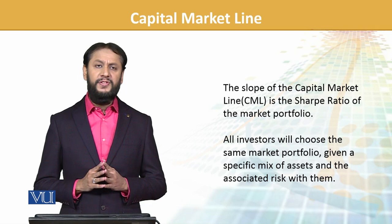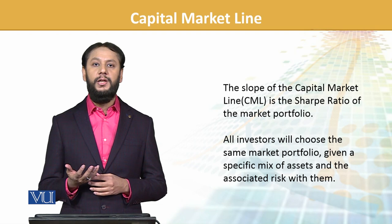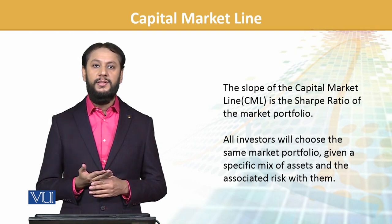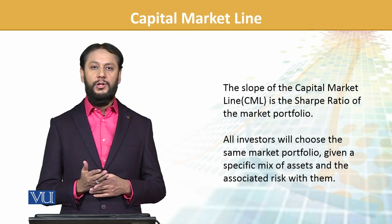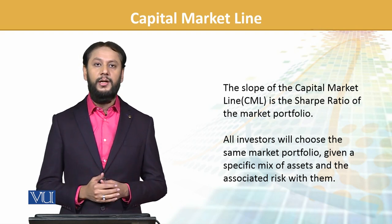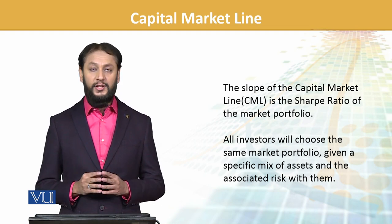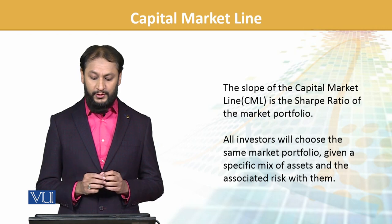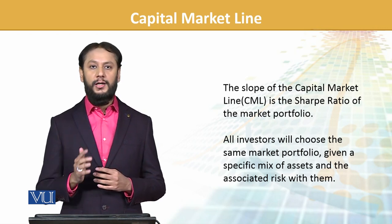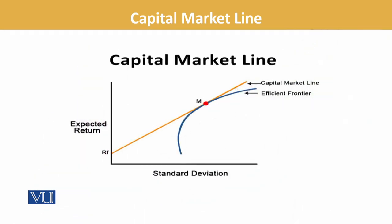The slope of the CML is actually the Sharpe ratio of the market portfolio. The Sharpe ratio is a measure to gauge risk-adjusted return. So the slope of the CML is the Sharpe ratio — how much incremental return we are getting for a given level of risk. All investors choose the same market portfolio given a specific mix of ratios and associated risk; only the weights move up or down, but the market risk levels remain the same for all.